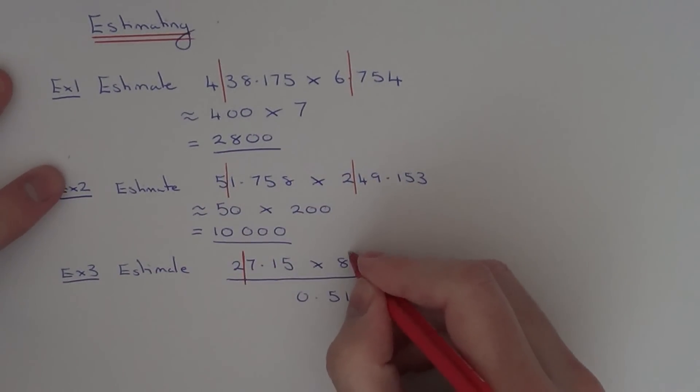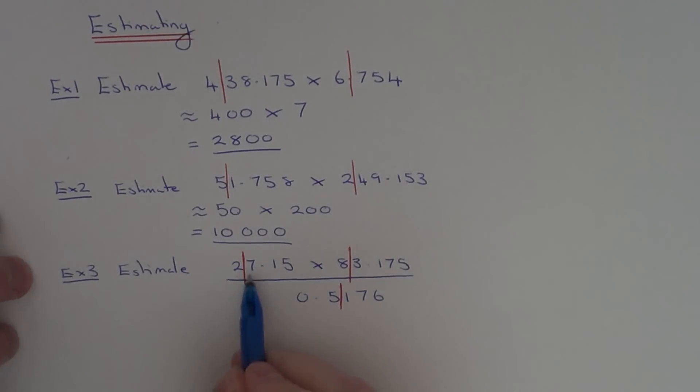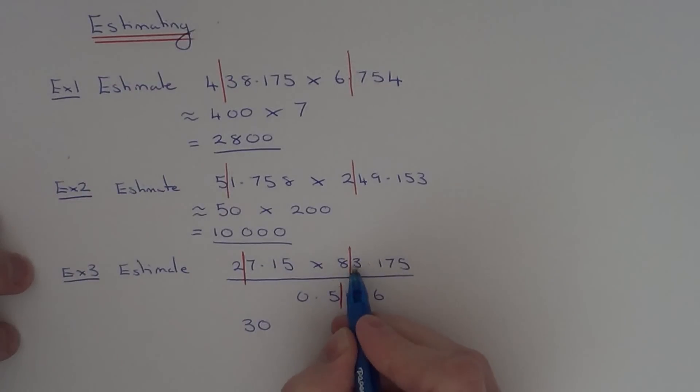So I'm going to cut that one off there, this one off here. This one we'll cut off here, not here, because it's the first non-zero digit from the left, which is 5, not 0. So 27.15 will round to 30, 83.175 will get rounded to 80, and on the bottom, this one will get rounded to 0.5.